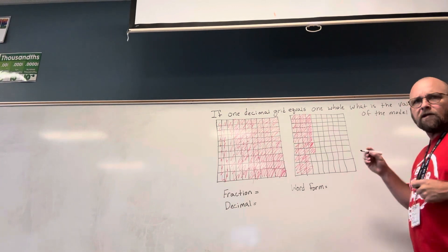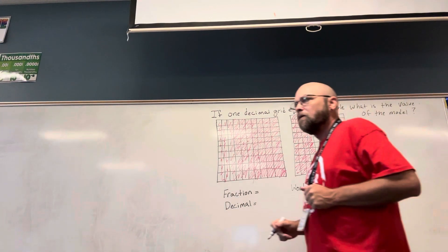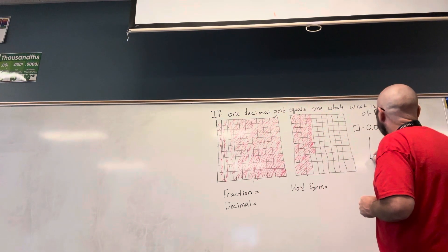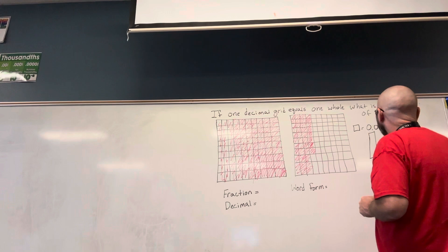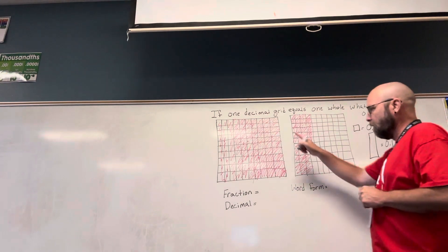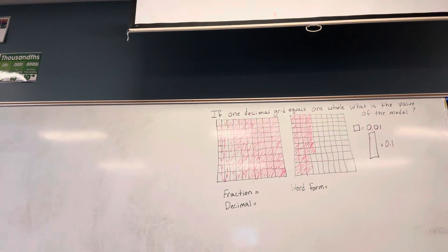But we've talked about this before, each little square is worth how much? One hundredth. Each row or column is worth how much? One-tenth. And each big square is worth one whole. All right.